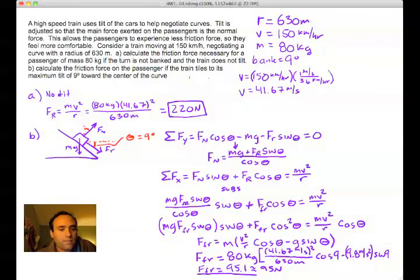Now you can go ahead and substitute in some of the numbers here. 80 kilograms for velocity 41.67 meters per second. And that's squared. And that's over 630 meters. times the cosine of 9 degrees, minus gravity 9.8 meters per second squared, times the sine of 9 degrees.